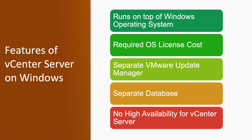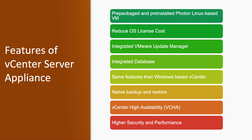Features of vCenter server on Windows operating system: it runs on top of Windows OS, you have to install the operating system first, then install vCenter server on top of that. It requires operating system licenses additionally, and it has a separate VMware Update Manager and database. There is no high availability for vCenter server in the Windows-based version. However, if you are using Appliance-based vCenter, it is a prepackaged and pre-installed Photon Linux-based virtual machine, and it reduces the operating system license cost.